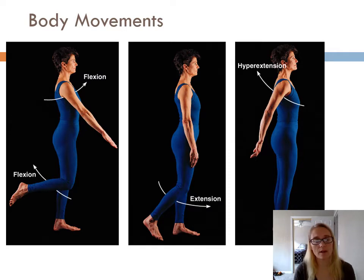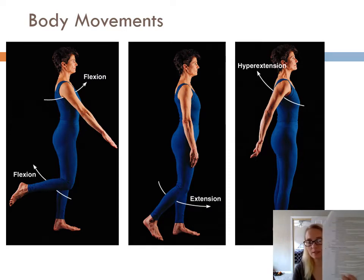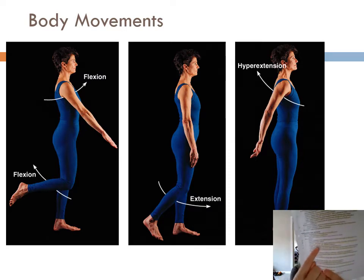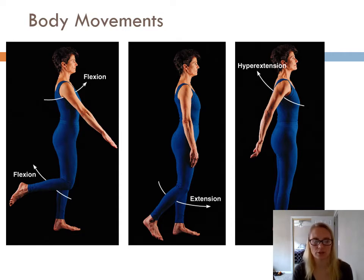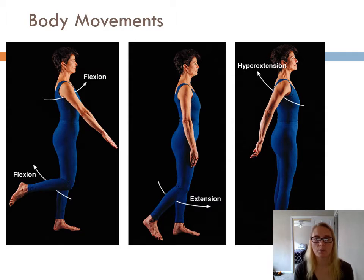All these movements are listed in your notes right here. You'll notice a lot of times these movements are opposite or antagonistic of each other. The way that our muscles are organized around our body is they usually are in pairs and opposite-moving pairs.